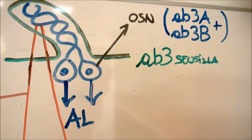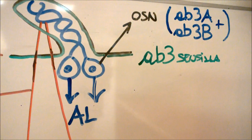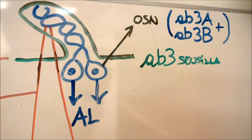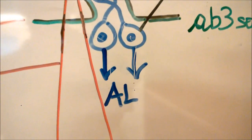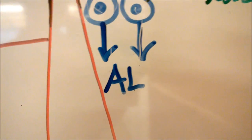Olfactory sensory neurons respond to odorant compounds and project their action potentials to specific glomeruli of the antennal lobe.